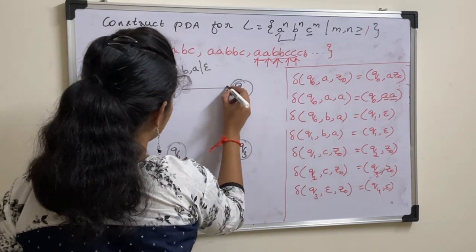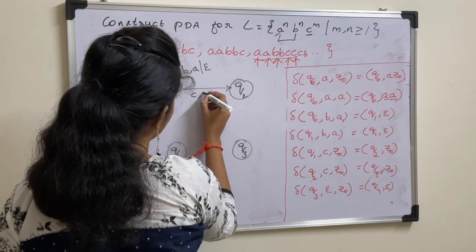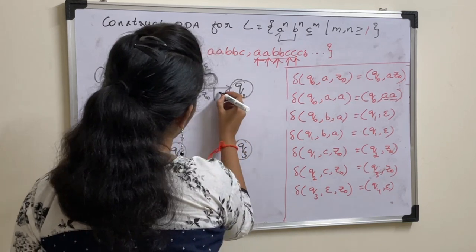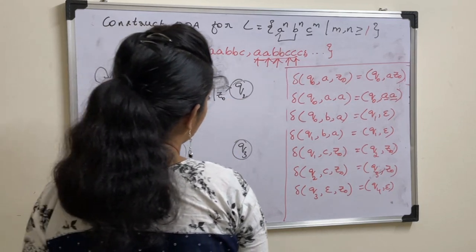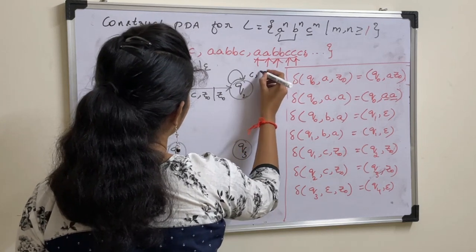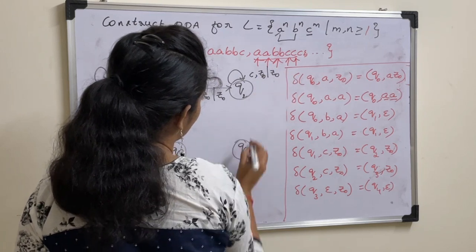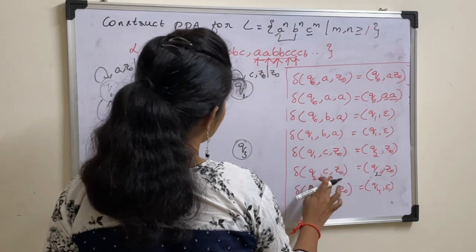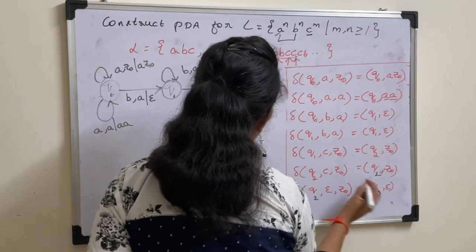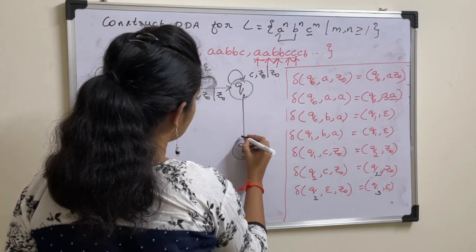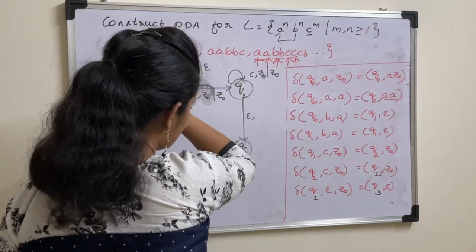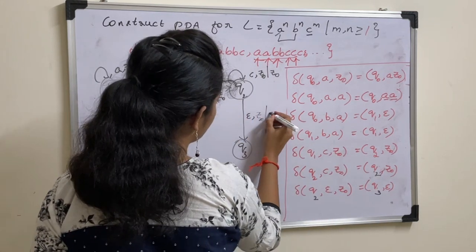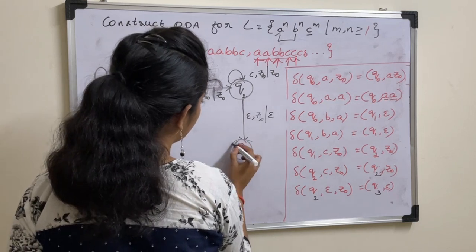If input symbol is C and top of the stack is Z naught, then move to state Q2 and write the top of the stack. Input C with stack top Z naught in Q2 — remain in the same state, so it is Q2 only. The final state will be Q3. After completing input processing, with epsilon and stack top Z naught — which is equivalent to popping Z naught — we move from Q2 to Q3. Q3 is the final state. State remains as it is when input symbol is the same in both cases; when input is empty, change state from Q2 to Q3.